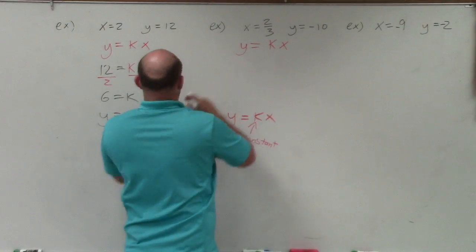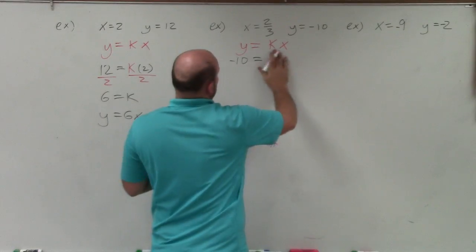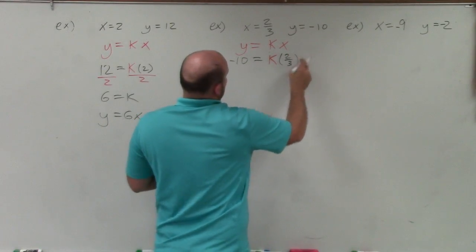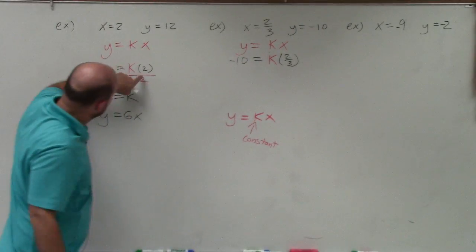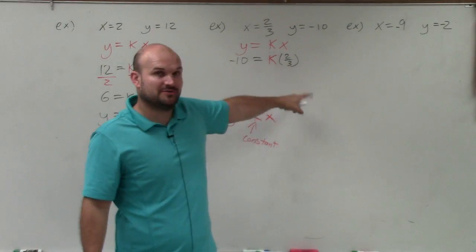So y is negative 10. So I plug in a negative 10 equals k times 2 thirds. So if we need to isolate k, see here, my k was being multiplied by 2. So we undid that by dividing. Now my k is being multiplied by 2 thirds.